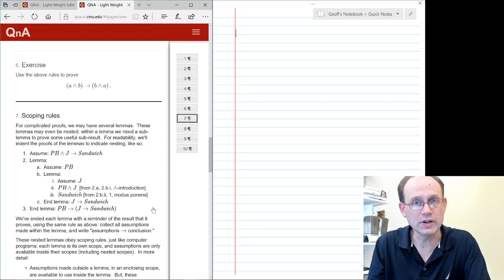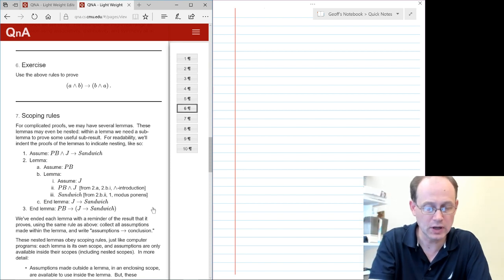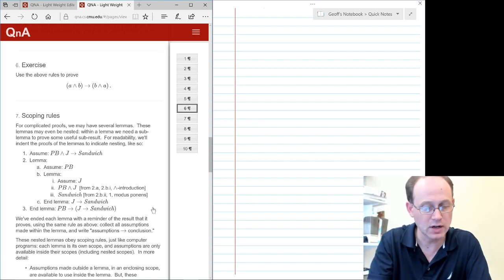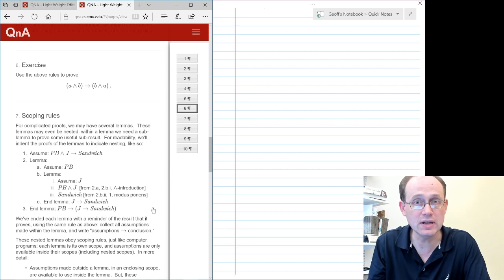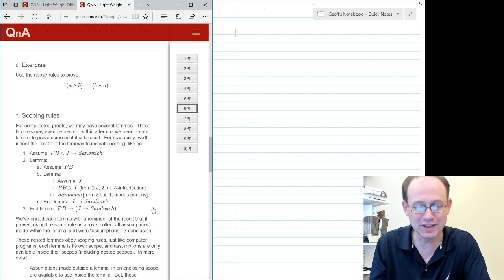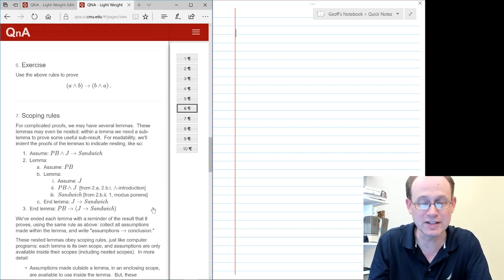All right, so today we're going to do an example of a short proof in propositional logic. We're going to be doing this exercise right here. We're going to show that A and B implies B and A. Not necessarily anything very profound, but it's a good example to get an idea of how to do a proof.